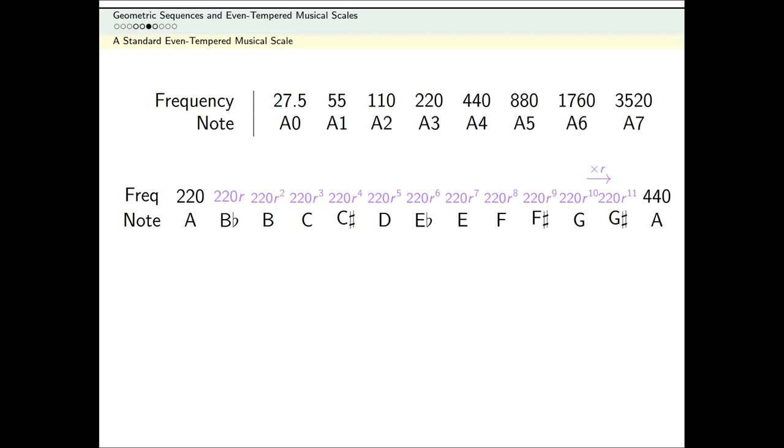However, we already also know that this frequency should be 440. So using that information, I can solve for R. I can figure out what the ratio should be between consecutive notes.